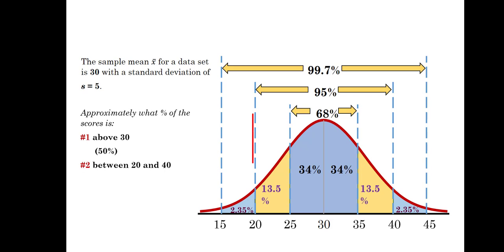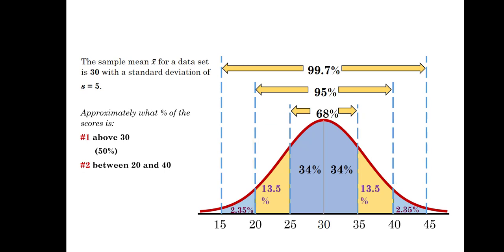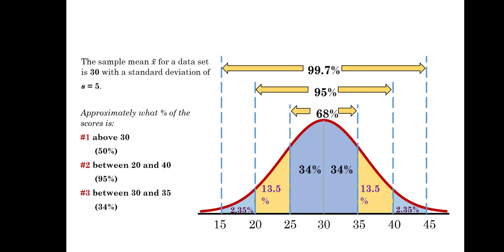If we want to know the area between 20 and 40, we locate those values and see right away that is within two standard deviations, so that will be approximately 95 percent. If we ask what percent of the scores is between 30 and 35, we locate that piece in our picture and see that will be approximately 34 percent.